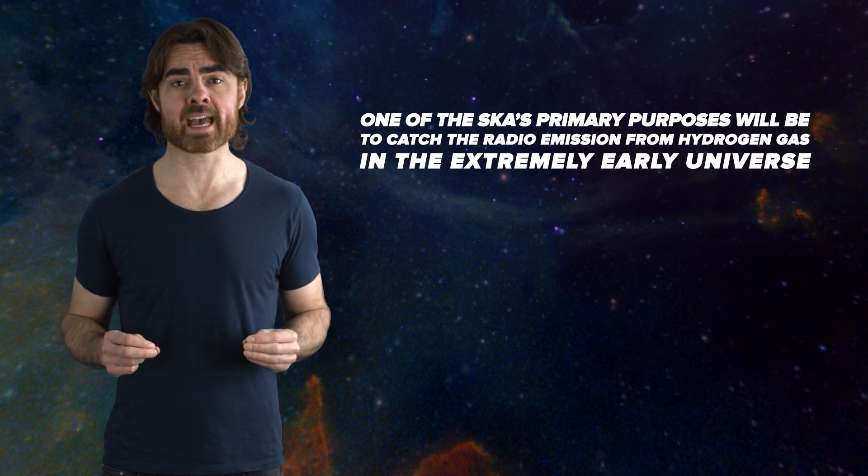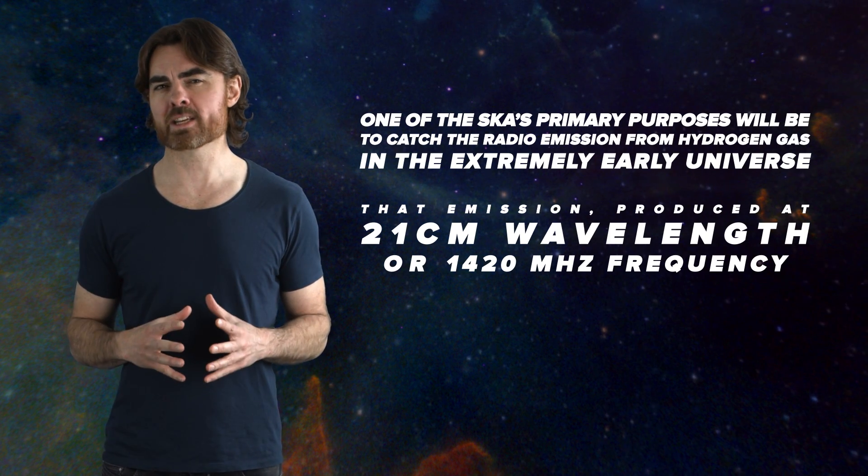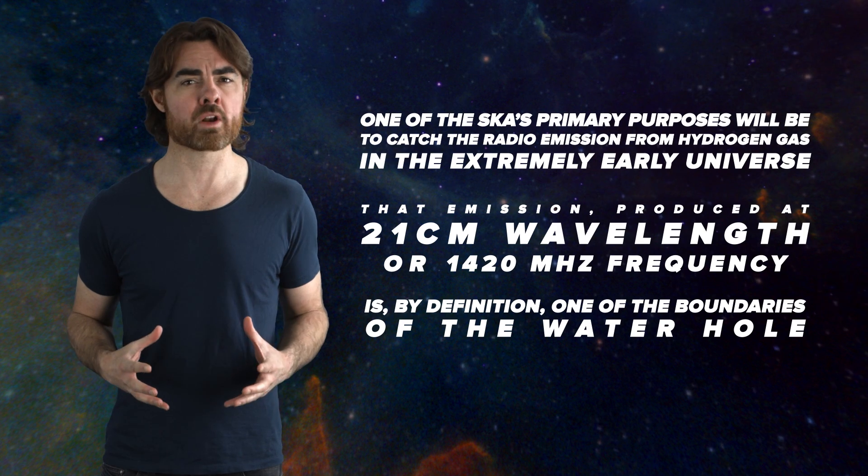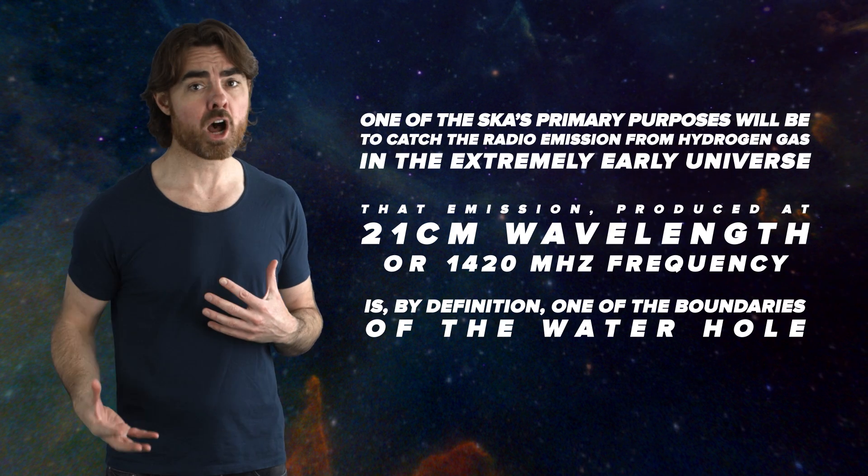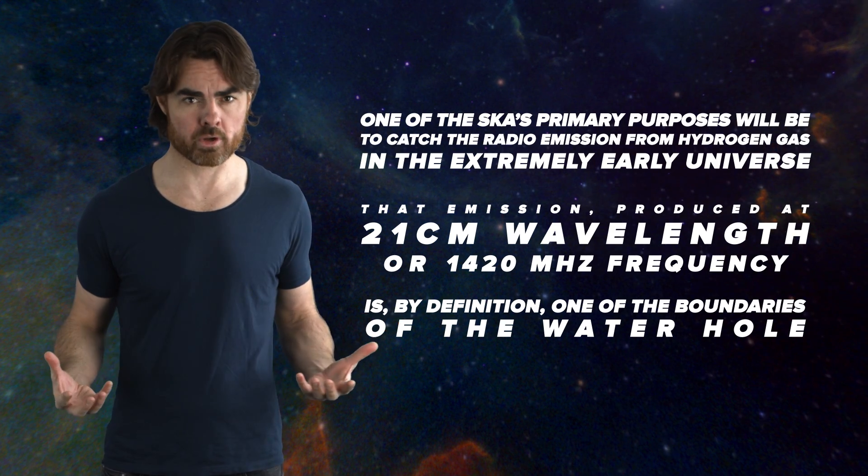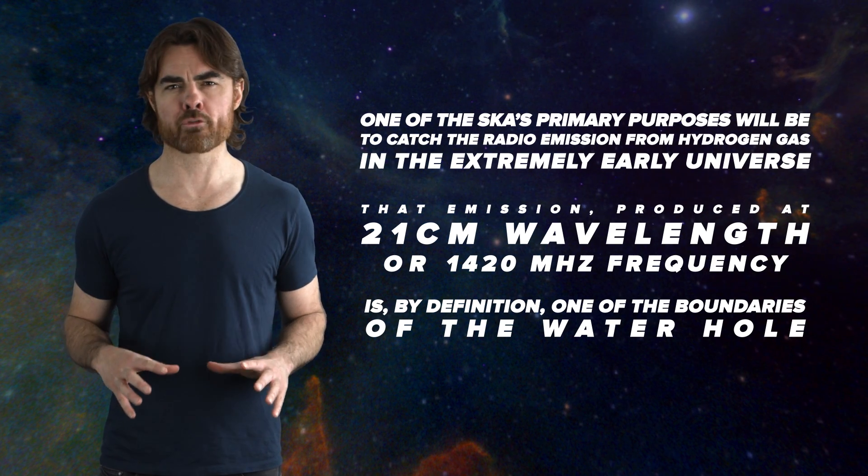The SKA is not being built to search for aliens. One of its primary purposes will be to catch the radio emission from hydrogen gas in the extremely early universe. That emission, produced at 21 centimeters wavelength or 1420 megahertz frequency, is by definition one of the boundaries of the waterhole. But if such radio waves travel to us from the earliest of times, then they become stretched out as they travel through an expanding universe. That redshifted early hydrogen emission is now found slap in the middle of the noisy lower frequency part of our own TV broadcast spectrum. To spot these radio photons, we need a truly gigantic interferometer, both for extreme sensitivity and to eliminate our own radio buzz. That's the SKA.